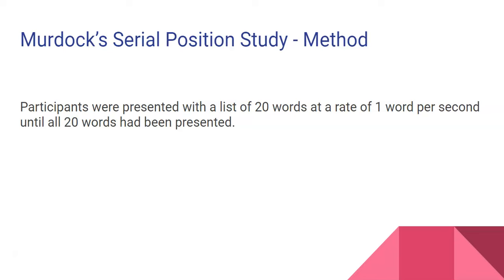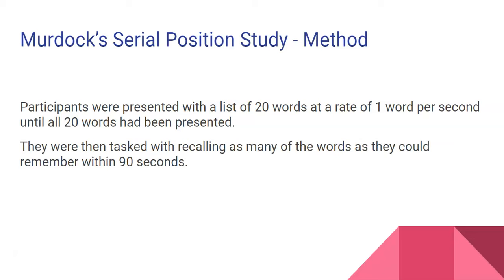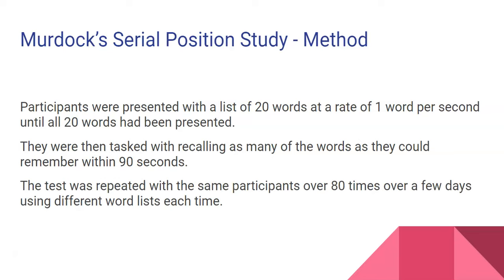And what Murdoch did, so Murdoch had all the participants and they were given a list of 20 words at a rate of one word a second until all 20 words had been presented. Then the participants had to recall as many words as they could within 90 seconds. And the test was repeated with the same participants over 80 times using different word lists every single time.